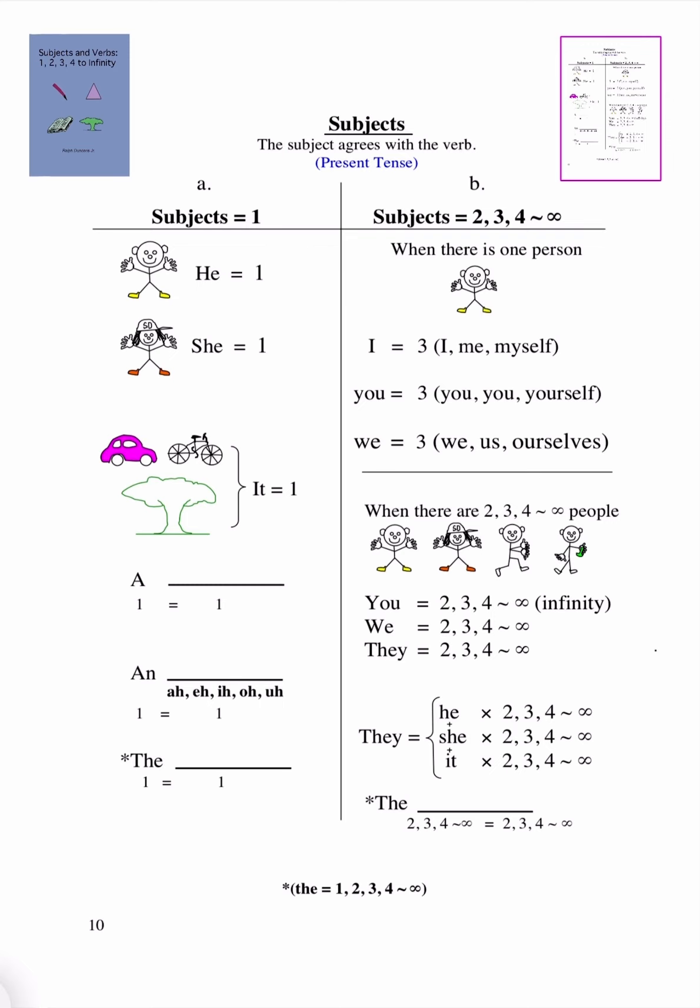Now, subjects are broken down into two categories: those that are equal to 1, and those that are equal to 2, 3, 4 to Infinity. Subjects that are equal to 1, we usually call those singular. Subjects equal to 2, 3, 4 to Infinity, we call those plural.